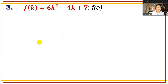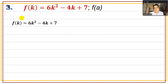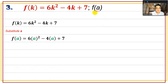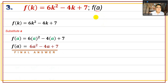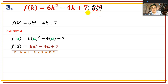Number 3: f(k) = 6k² - 4k + 7, with replacement value k = a (another variable). Since the replacement value is not a number but another variable, just replace every k with a. The final answer is f(a) = 6a² - 4a + 7.